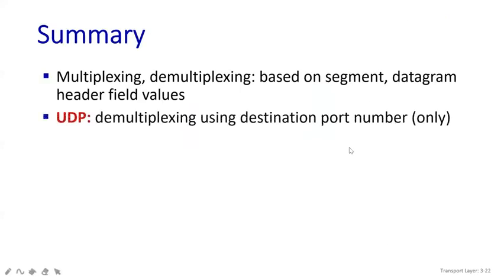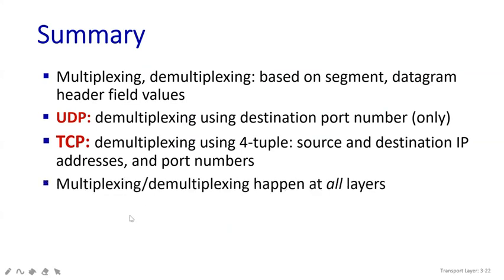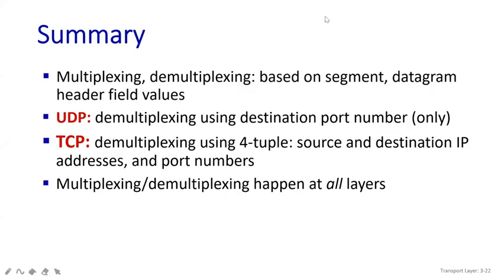In summary, multiplexing and demultiplexing are based on segment, datagram, and header field values. UDP uses demultiplexing with destination port number only — two-tuple values. TCP uses four-tuple values: source IP address and port number, and destination IP address and port number. Also, multiplexing and demultiplexing can happen at all layers — it is not mandatory that it happens only in the transport layer.